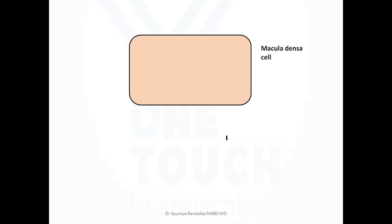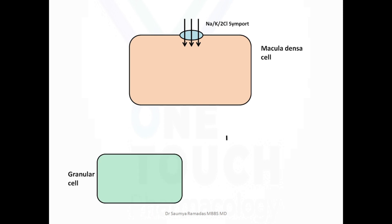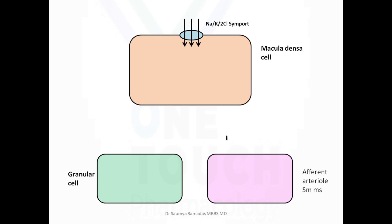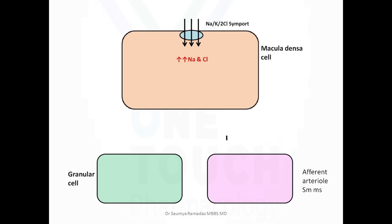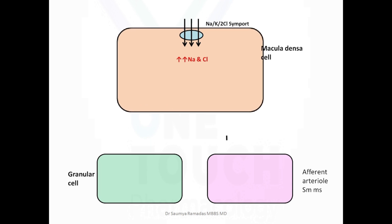This is the macula densa cell with the sodium-2-chloride-potassium symporter. This is the granular cell responsible for secretion of renin, and this is the efferent arteriolar smooth muscle. When sodium chloride delivery is high at the macula densa cell, the macula densa cell starts to swell up.